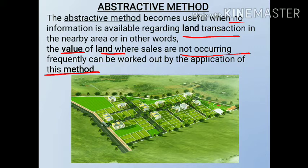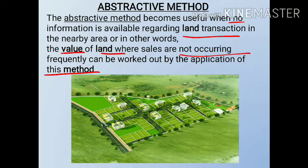As compared to the comparative method, the abstractive method is more scientific. Because we don't do comparison in this method — we do some calculations in which we get a more accurate result. In the comparative method, we have only some elements like size, shape, frontage, and locality. So we can use the abstractive method as it is a more scientific method.